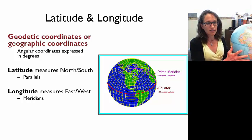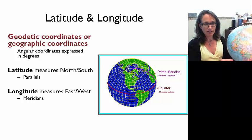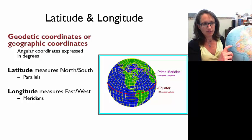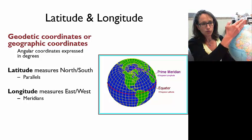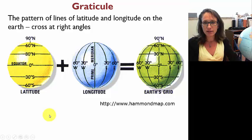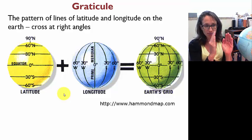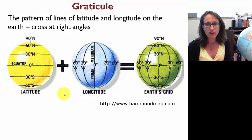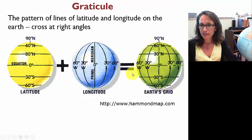It's easy to understand by looking at a globe. We have the poles, we have the equator. Latitude measures north and south on the earth, and lines of latitude are called parallels because they are equidistant and parallel from each other. Lines of longitude run north-south but measure where we are east-west, and lines of longitude are called meridians. Together, the network of these lines is called the graticule, and they cross each other at right angles to create the earth's grid.